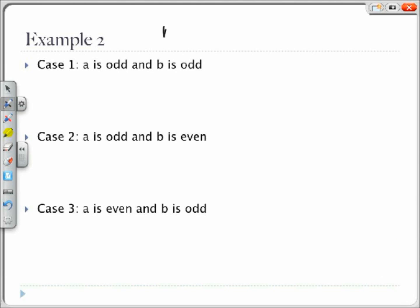Here we get a cubed plus ab squared plus b cubed equals 0. And now we have 3 cases with the numbers that we have left. We have the first case that a is odd and b is odd. Second case that a is odd and b is even.